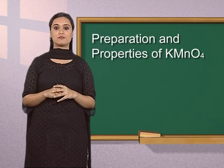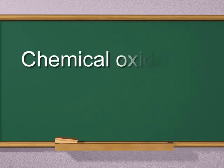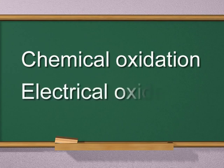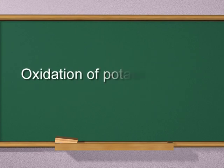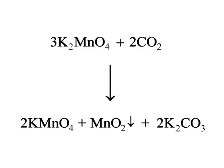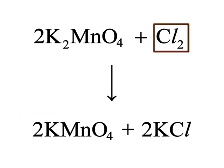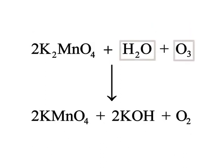Oxidation of potassium manganate to potassium permanganate takes place by two methods: chemical oxidation and electrical oxidation. In chemical oxidation, the fused mass of potassium manganate is extracted with water and after filtration, the solution is converted into potassium permanganate by bubbling carbon dioxide, chlorine gas or ozonized water.